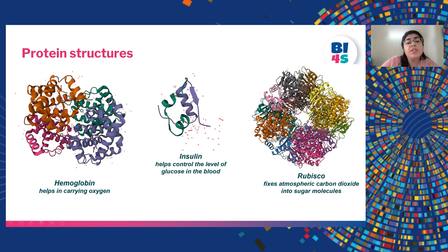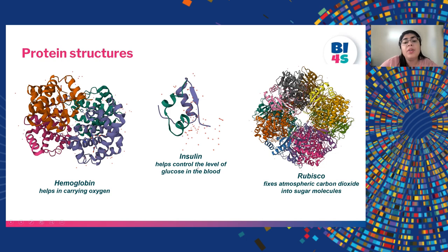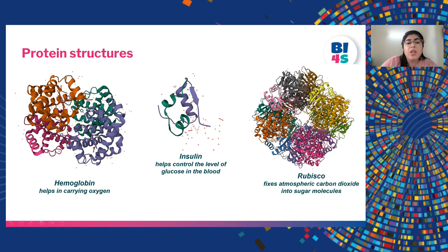Examples of protein structures include hemoglobin, which gives blood its red color and helps carry oxygen throughout the body cells. The second is insulin, which diabetic patients take as injections, and it helps to control the level of glucose in the blood. A third important protein found in plant systems is rubisco, which takes atmospheric carbon dioxide and helps plants in the process of photosynthesis. All these proteins fold themselves to perform their functions effectively.